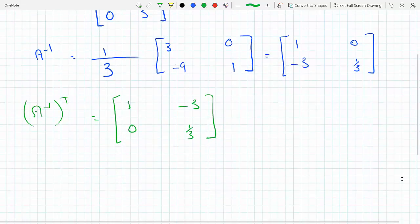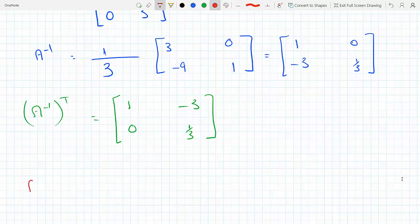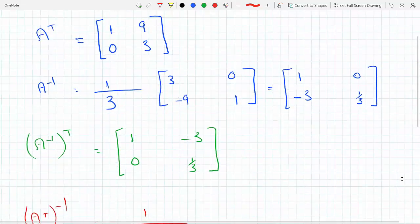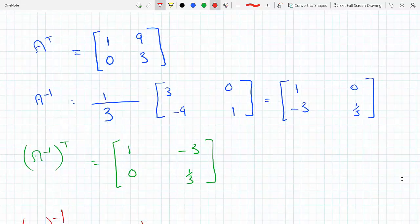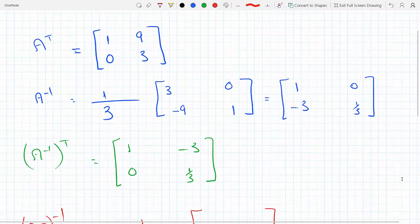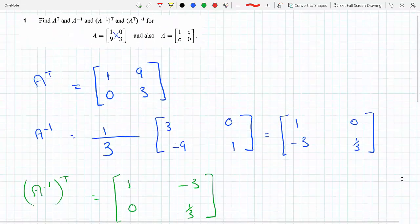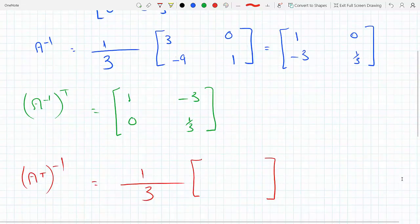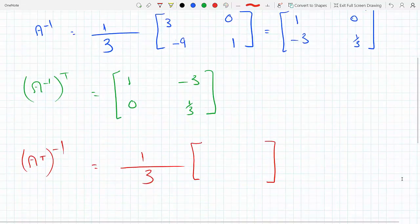And now we're going to find (A transpose) inverse. I'm going to take my A transpose and I'm going to find the inverse of it. So it's 1 over the determinant of the transpose. The determinant is 1 times 3, 3 minus 0, which is 3. So 1/3.